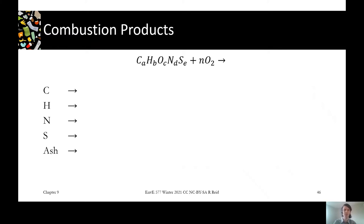I'll give you a couple seconds to think through what we'll get from our carbon, hydrogen, nitrogen, and sulfur, as well as the ash fraction, which doesn't show up in the empirical formula above, but we know there's a non-organic portion in our waste as well.